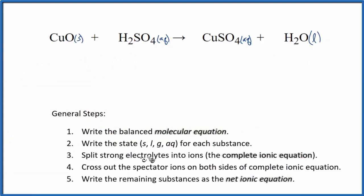Next we're going to split the strong electrolytes into their ions and this will give us the complete ionic equation. So a strong electrolyte, that's one that dissolves and breaks apart into its ions. We said that CuO here, that's a solid. So because this is a solid, we're not going to split it apart into its ions. We're just going to write CuO.